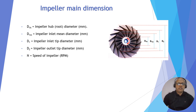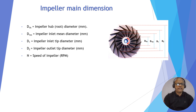The impeller main dimensions: D1H is the inlet impeller hub diameter or root diameter at inlet. D1N is the impeller inlet mean diameter. D1M is the inlet mean diameter.